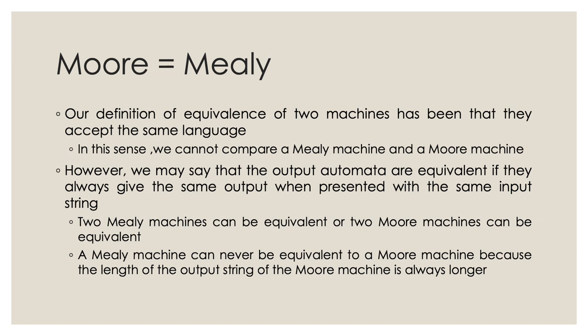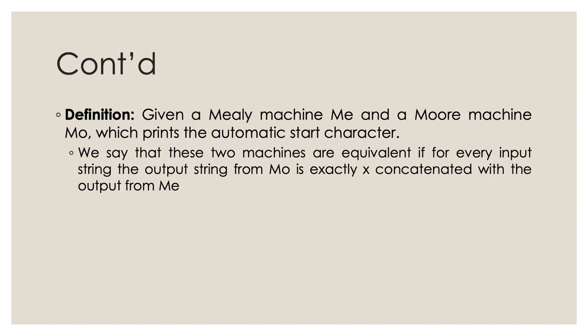However, we may say that output automata are equivalent if they always give the same output when presented with the same input stream. Two Mealy machines can be equivalent, or two Moore machines can be equivalent, but a Mealy machine can never be equivalent to a Moore machine because of the output length issue. To get around this difficulty, we define that a Mealy machine is equivalent to a Moore machine whenever they always result in the same output if the automatic start symbol for the Moore machine is deleted from the front of the output.